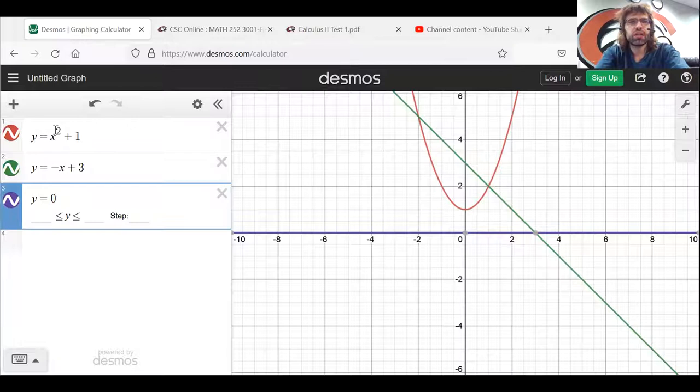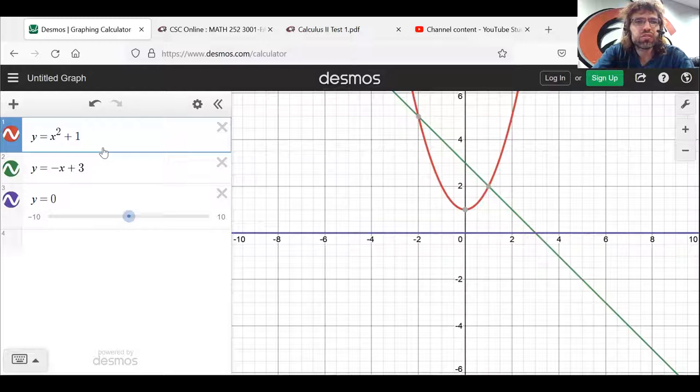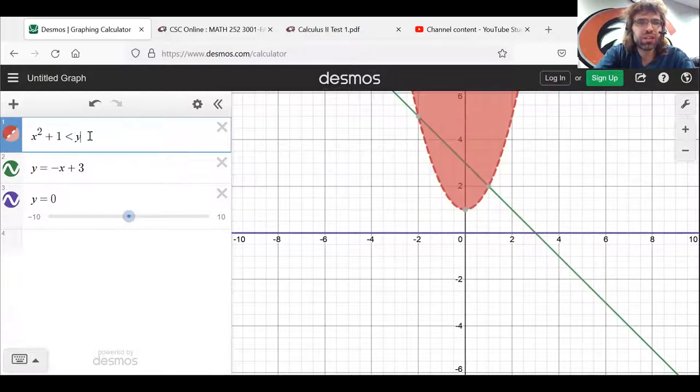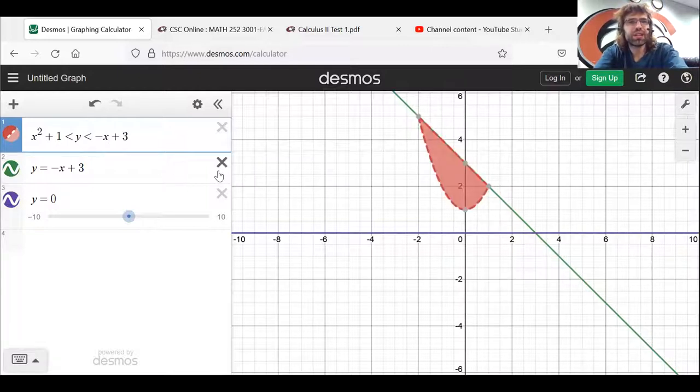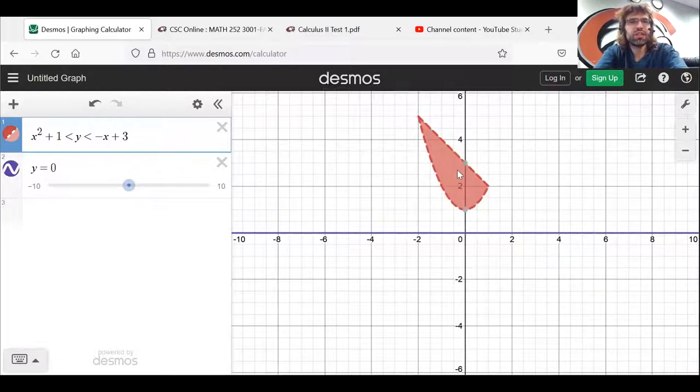And I could, by the way, I could even, let's see, x squared plus one is less than y is less than negative x plus three. So here's the region.